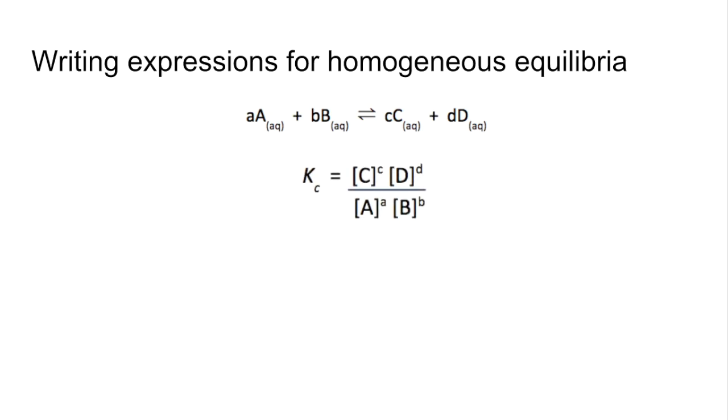So Kc would be the equilibrium concentrations of the products, and you raise them to the power that's balancing the equation, divided by the equilibrium concentrations of the reactants. So the little c in the Kc represents the equilibrium concentrations, and obviously these square brackets are used for that.